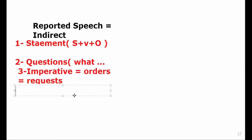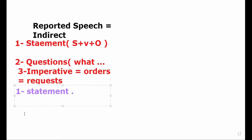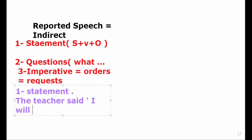We'll move to the first kind: statement. How can we change a statement into reported speech? A statement is any sentence that starts with a subject, then a verb, then an object. For example: 'The teacher said, I will give you an exam tomorrow.' These are the real words of the teacher inside the speech markers.